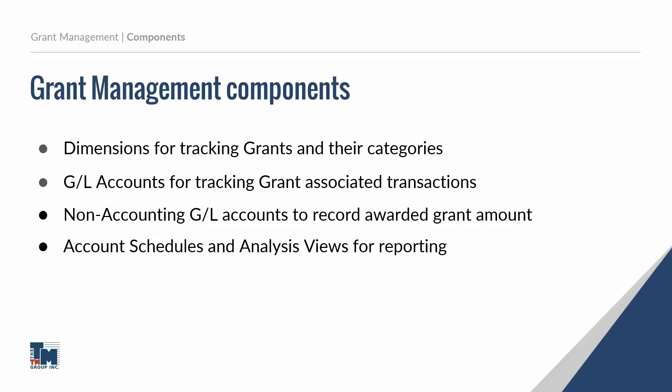In Business Central, we're going to talk about some of the components that make up the ability to manage grants within the system. One critical factor we have in Business Central is called dimensions — basically a characteristic or attribute on a transaction that allows us to tag that transaction to a particular grant or category of that grant, so we can always track and report. That's really the main focus and driver: being able to report on how we did or how we are doing with these grants. And then we have specific GL accounts that we're tracking relating to those grants, keeping transactions organized. We also have a non-accounting structure that we use for transacting and reporting on grants as well.